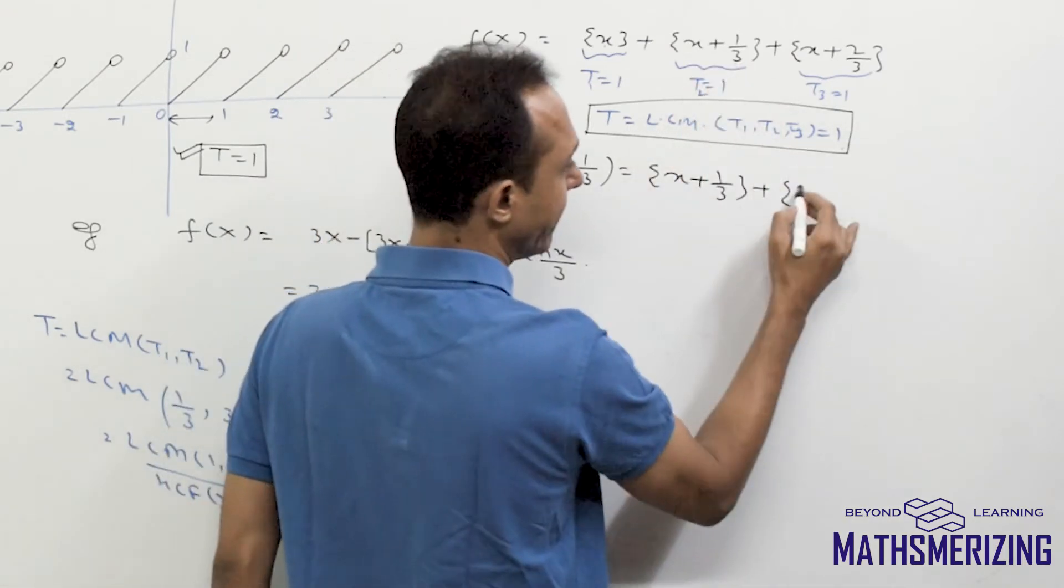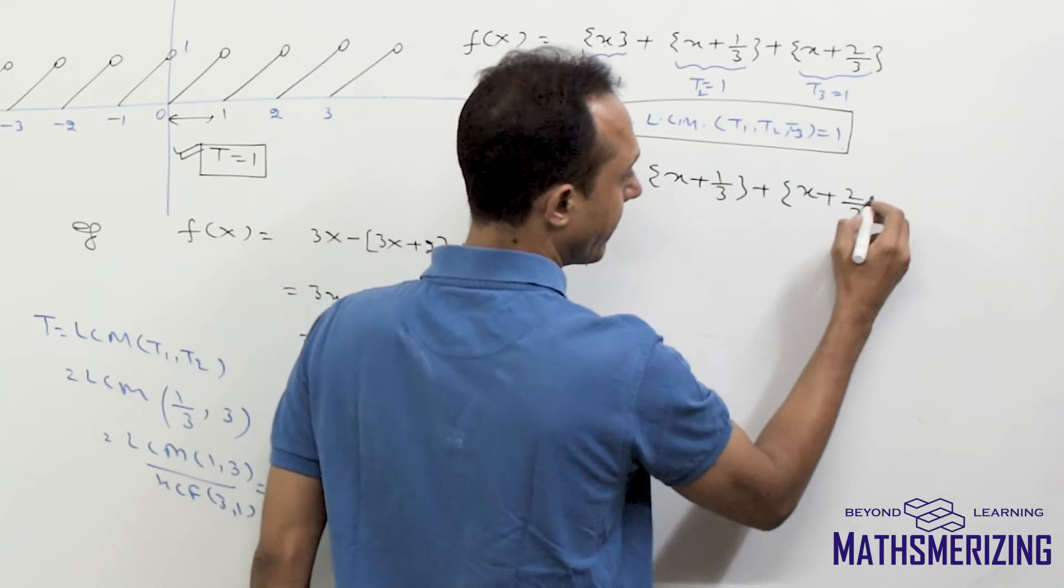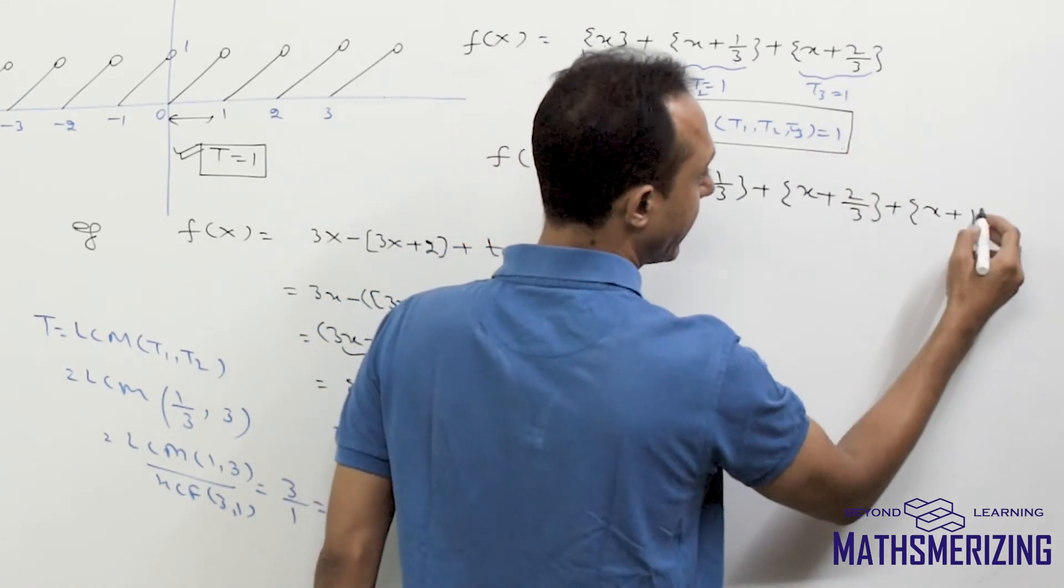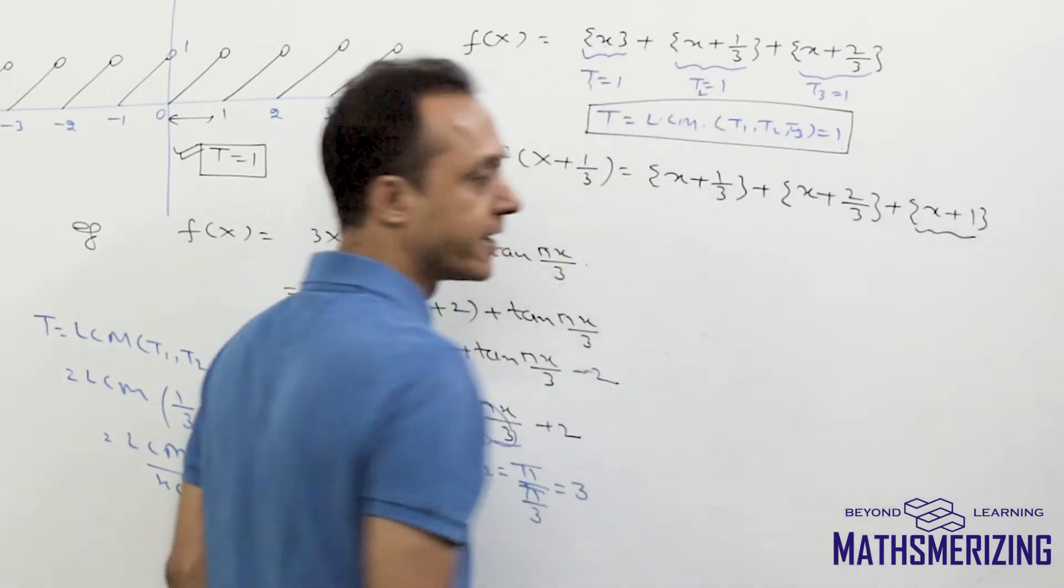Now here 1 by 3 plus 1 by 3 will be 2 by 3. And here I can write it as x plus 1 by 3 plus 2 by 3, here will be fraction part of x plus 1.